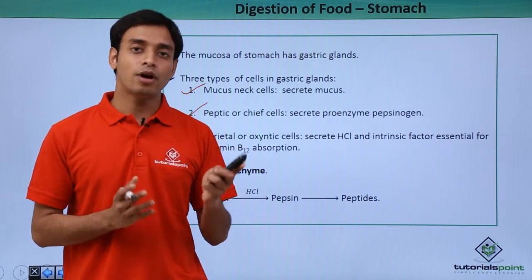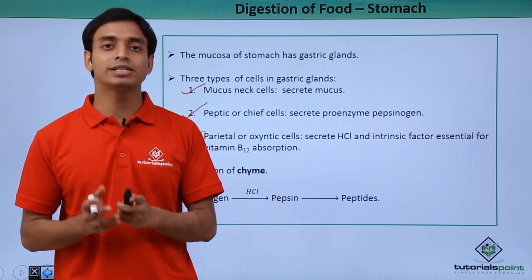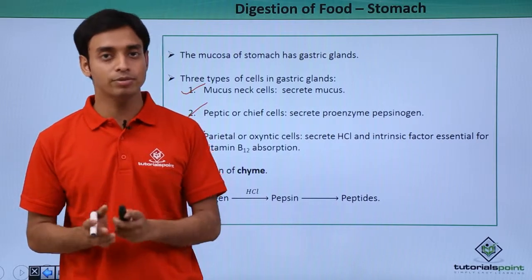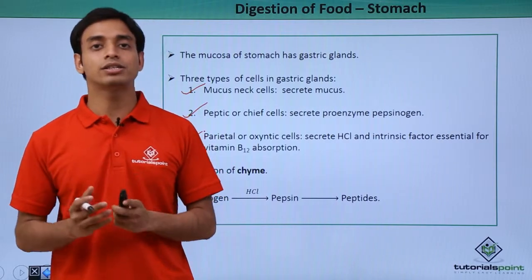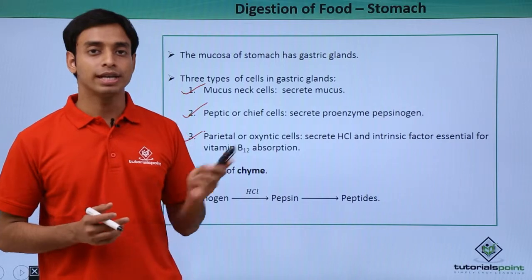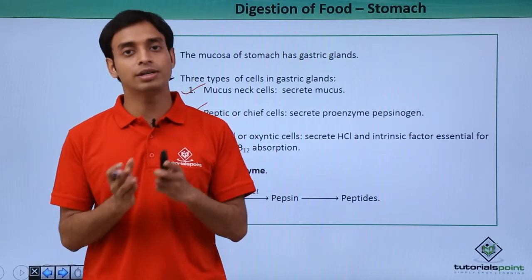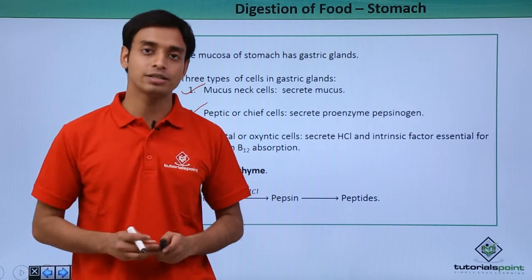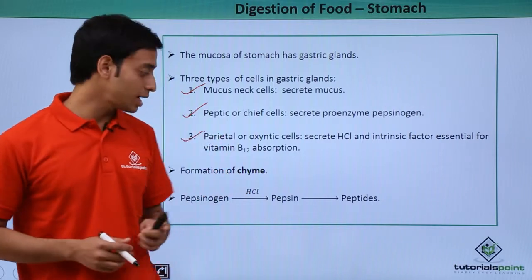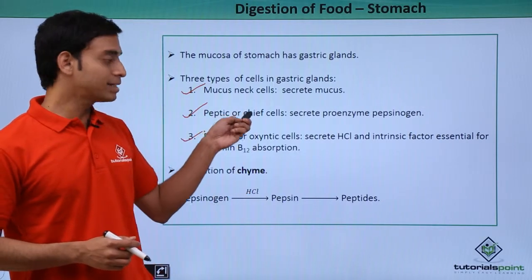Chyme is a form of food which is formed in the stomach because of the mixing of the bolus — the food coming from the esophagus — with the digestive enzymes or juices in the stomach. This form of food mixed with digestive juices in the stomach is known as chyme.